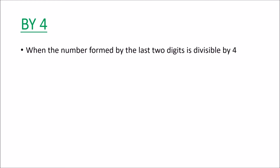Any number is divisible by 4 when the number formed by the last two digits is divisible by 4. Let us see an example. We have a large number and we check the last two digits, which are 16. Since 16 is divisible by 4, the whole number is divisible by 4. This is the simplest rule for divisibility by 4.